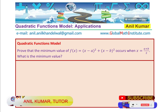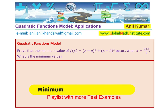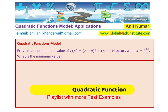I am Anil Kumar. Welcome to my YouTube channel and the website Global Math Institute. In this video we have a very interesting thinking and application question. We need to prove that the minimum value of f(x) = (x - a)² + (x - b)² occurs when x = (a + b) / 2. We also need to find what that minimum value is.